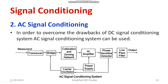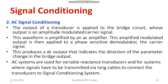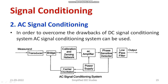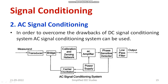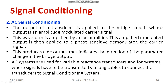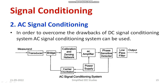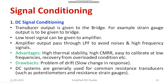The output of the transducer is applied to the bridge circuit, whose output is an amplitude-modulated carrier signal. This waveform is amplified by the AC amplifier after passing through the calibration network. The amplified modulated output is then applied to the phase sensitive demodulator. So modulation and demodulation are taking place in this process.